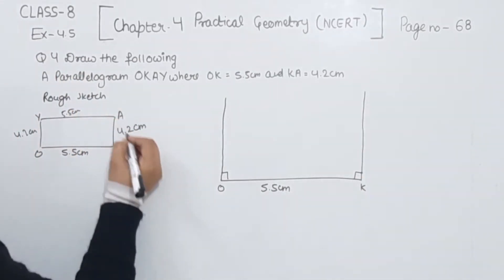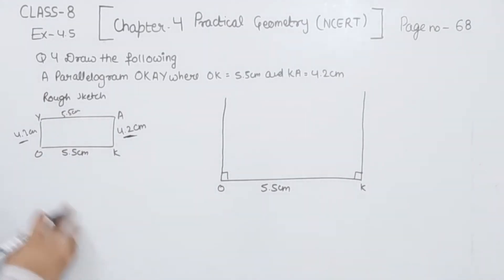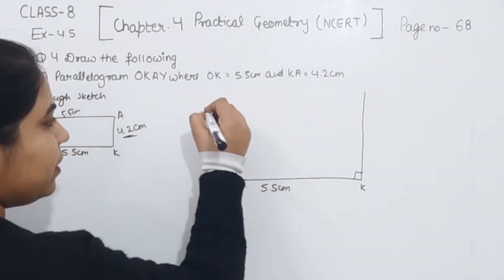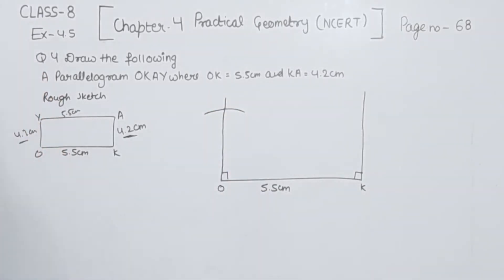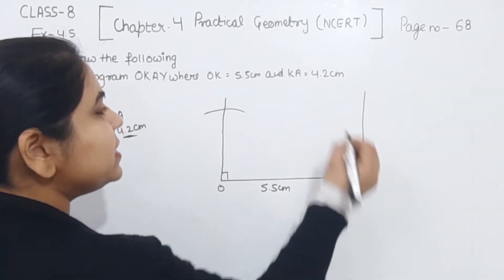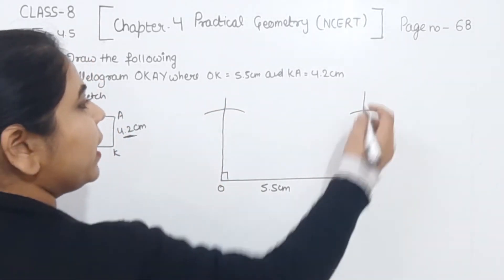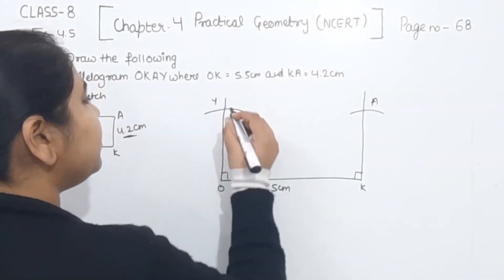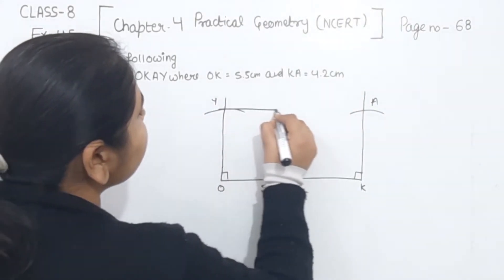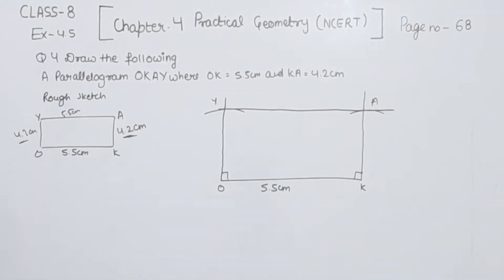Now we know that KA is equal to 4.2 and this one is also 4.2. So we are going to take the measurement of 4.2 on the compass and O at the center we are going to draw an arc. Now with the same measurement 4.2 cm on the compass, K as the center we are going to draw an arc. Now this is the OK, this will be the A and this will be the Y. Now we are going to join A with Y. So this will be the required parallelogram OKAY.